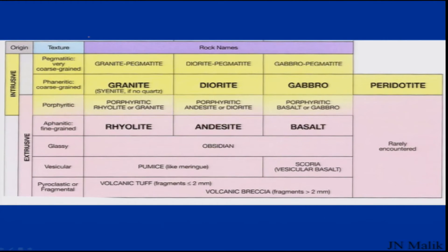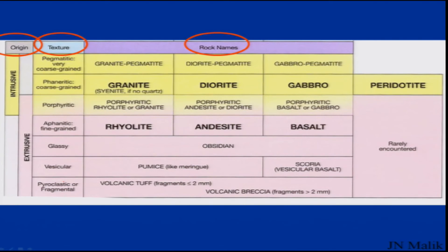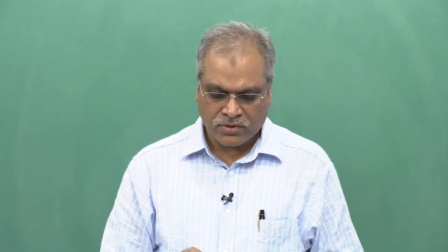The classification table covers: origin — whether intrusive or extrusive; texture — classified based on crystal or grain size as pegmatite, phaneritic, porphyritic, etc.; and rock names based on chemical composition. Using all these combinations, you can easily identify a rock and determine whether it is extrusive or intrusive.